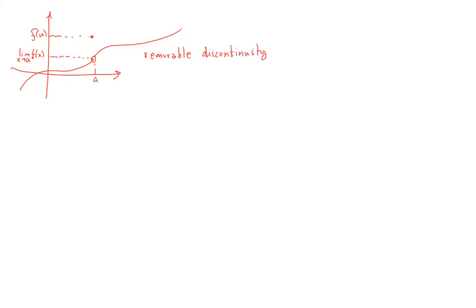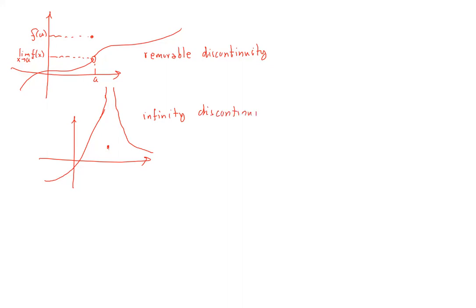We also have other types of discontinuity. For example, if a function has an asymptote at a given point, even if you define it at that point, the function has an asymptote there. That's usually called infinite discontinuity — when at least one of the one-sided limits is infinity, meaning the function has a vertical asymptote at that point.